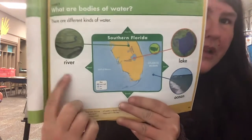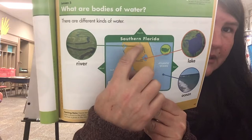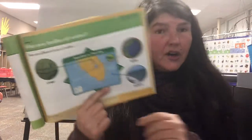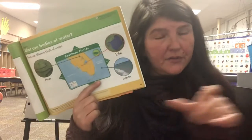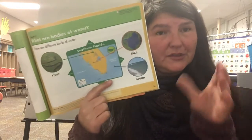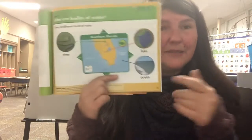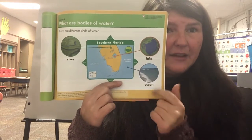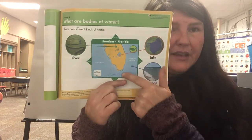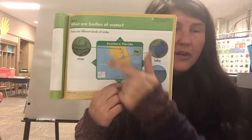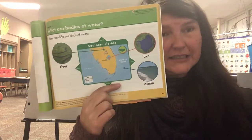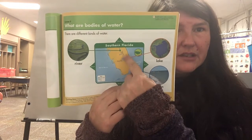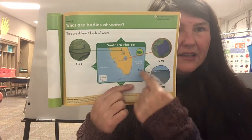We have rivers — this little wiggly line is a river. Rivers are water that flows and there are banks on the sides. We have lakes, and they're a little bit larger — this is a lake. And then big amounts of water that are around our continents are called oceans.